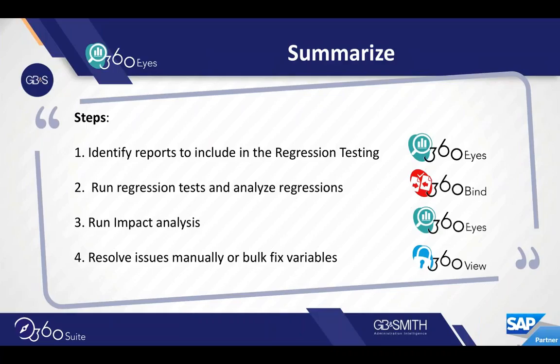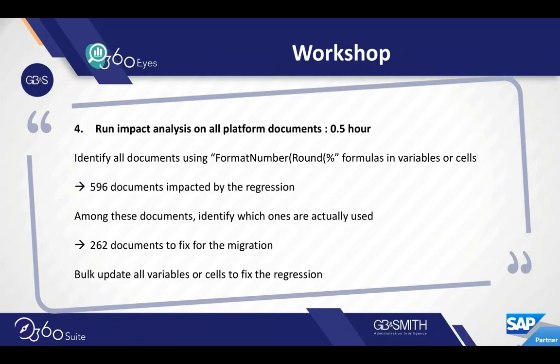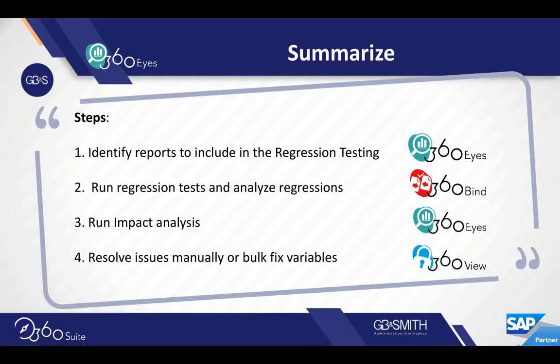In this particular use case, the customer found that a FormatNumber function was not working — something they were using in variables. The next step is to determine where else in the environment those issues exist. They selected the reports for testing, found issues, but there may be other reports in their environment with those same issues.